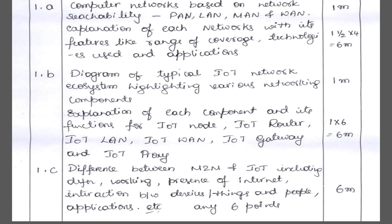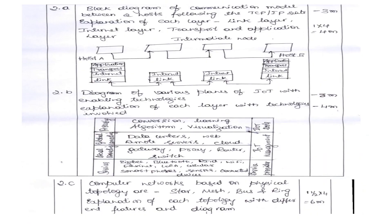For the IoT vs M2M differentiation, if it's for six marks, you don't write only six points — write around seven to eight points. Start with the definition of M2M and IoT, then cover working of M2M and IoT, the interaction taking place between devices, and the applications under M2M and IoT. Around six to seven points will earn you six marks.